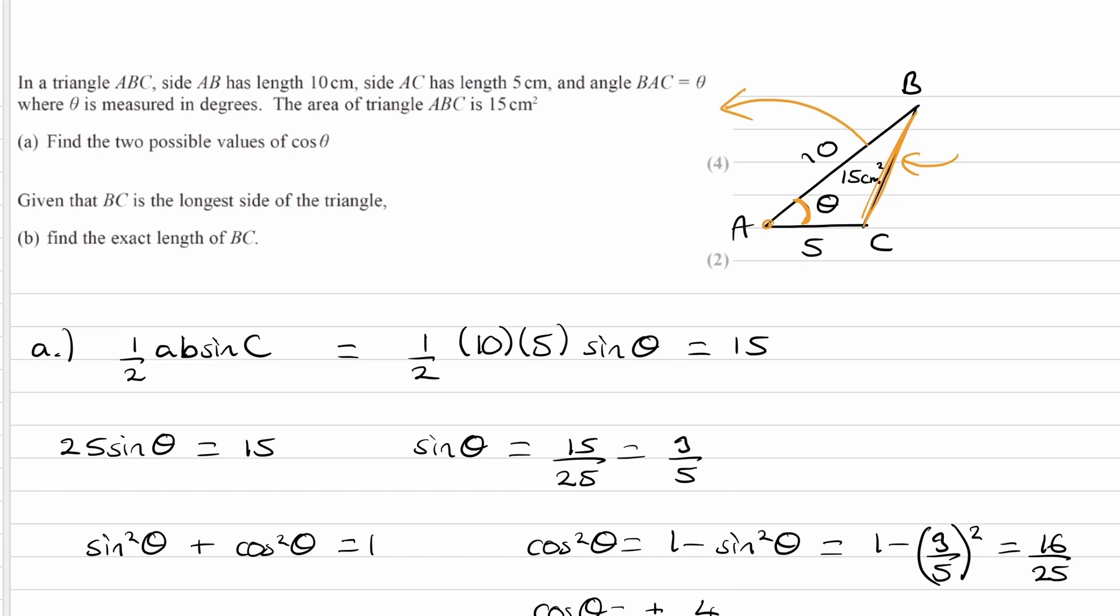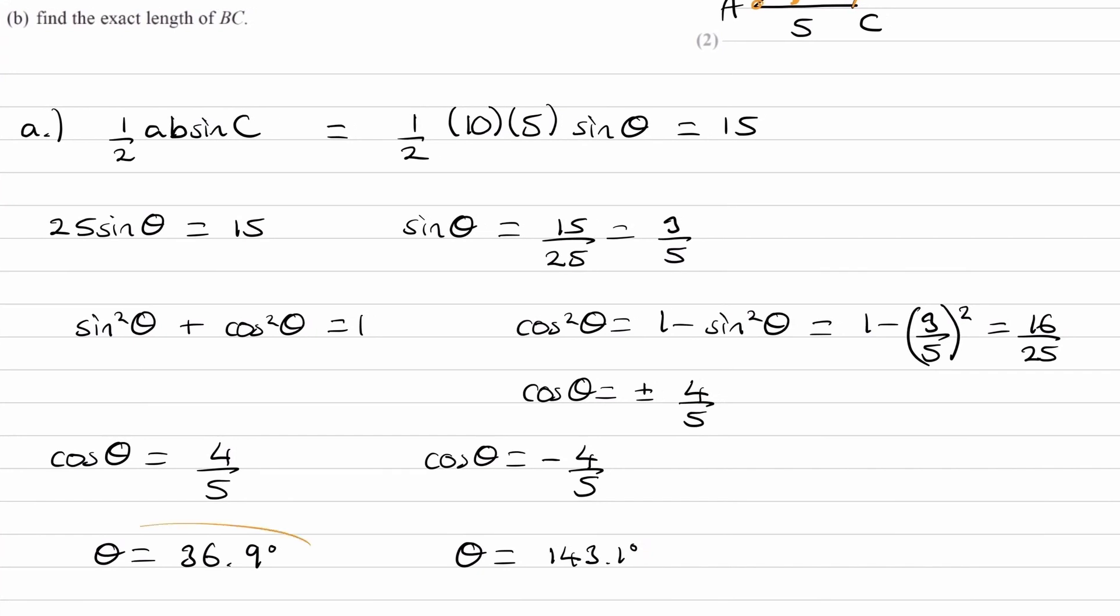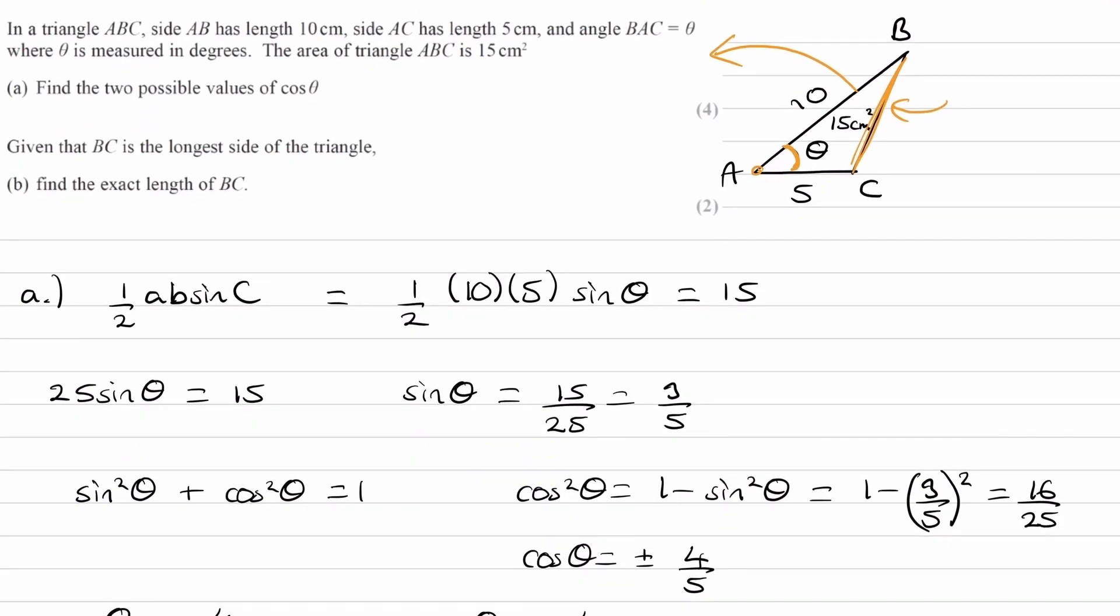The way I've drawn it right now, the angle seems to be about 36.9. But if I were to draw the triangle like this, here's the 5 and then this could be the 10. This would be BC. This is the 140 something angle. This length here would be BC, and that would be longer than what we have here. The bigger the angle gets, the bigger BC gets.